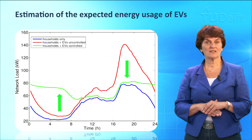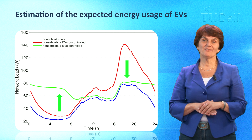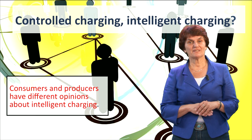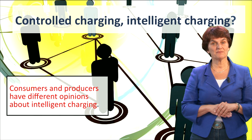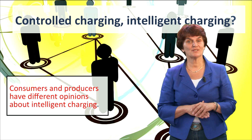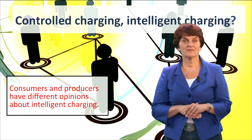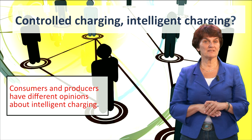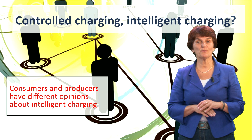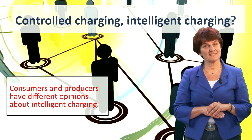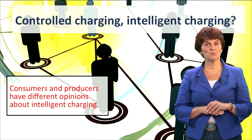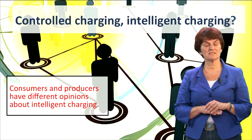Intelligent charging, called controlled charging, can avoid an extensive increase of the peak load by spreading it. However, controlled charging does not mean the same for car owners or aggregators representing them, for distribution network operators, and for energy producers. All of them think differently about intelligent charging. Car owners will prefer charging during the periods with lowest electricity prices, mostly at night, while electricity network operators will prefer charging without violating network capacity and minimizing the reinforcements of the grid.